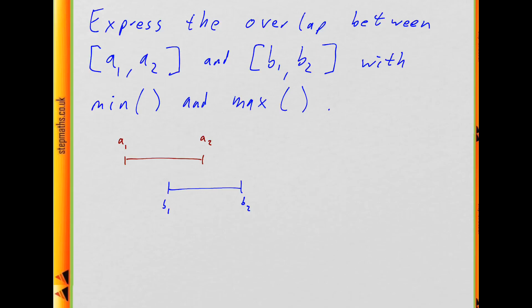The overlap in this case is going to be from b1 to a2, and the length of that is going to be a2 minus b1. So that's our first guess. But there's a bunch of things that could go wrong. First, we know we haven't used min and max.